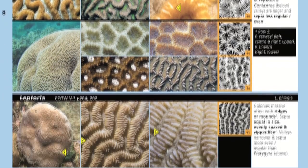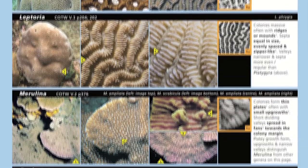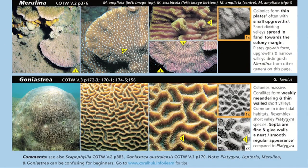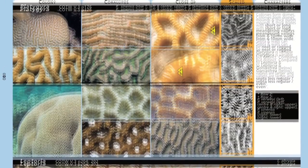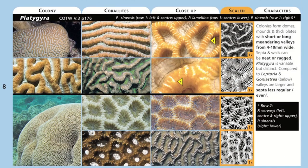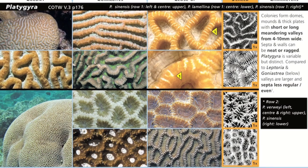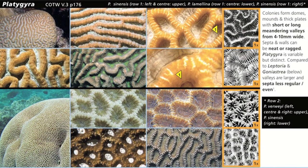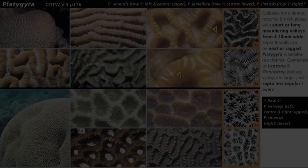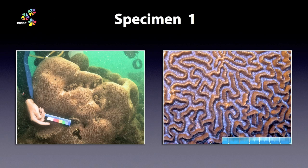We've got lots of meandering corals here. But by checking the true scale boxes, we quickly come to favour Platygyra, as the valleys of the others are smaller in diameter. The images of Platygyra seem to show both long and short valleys. That's because the different Platygyra species do vary a lot. Clearly, our specimen is a long valley form.